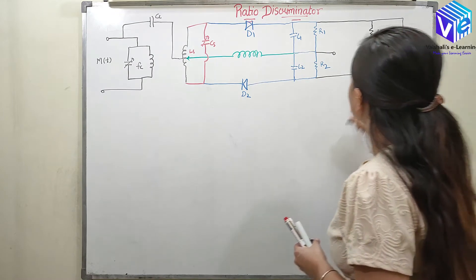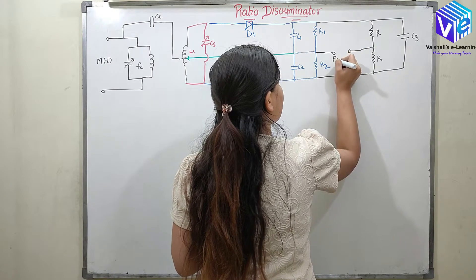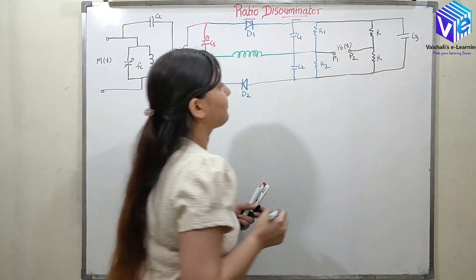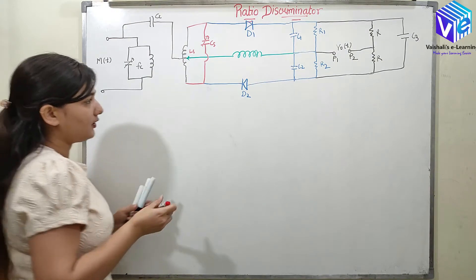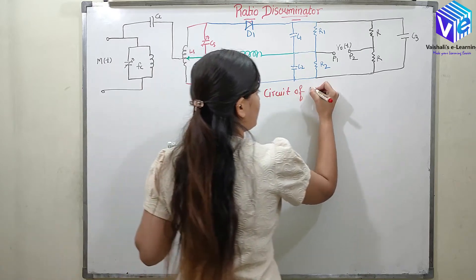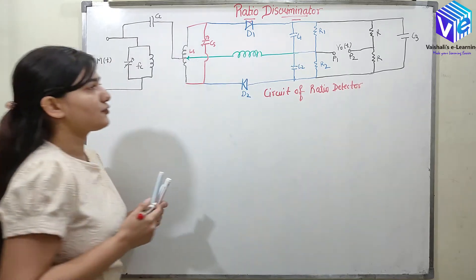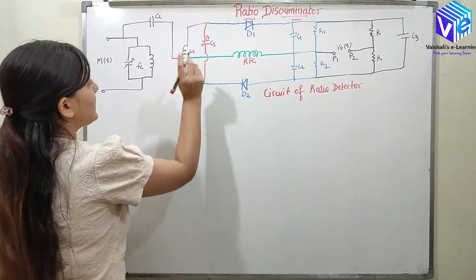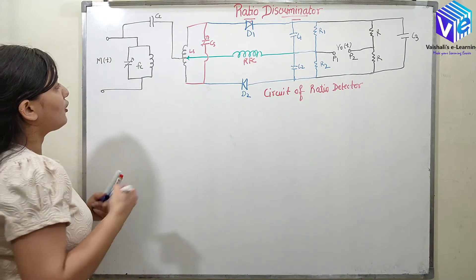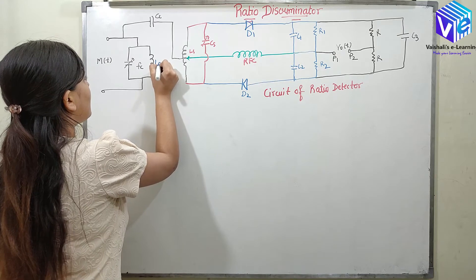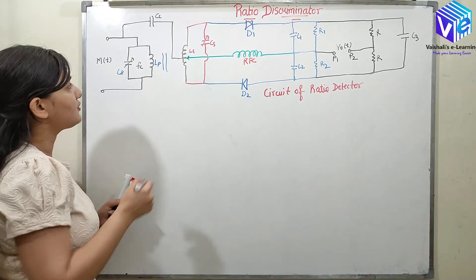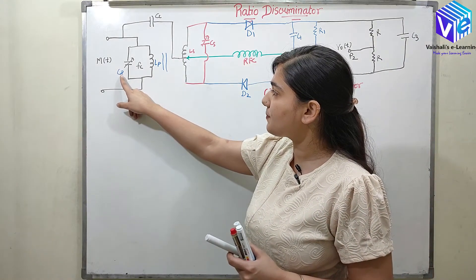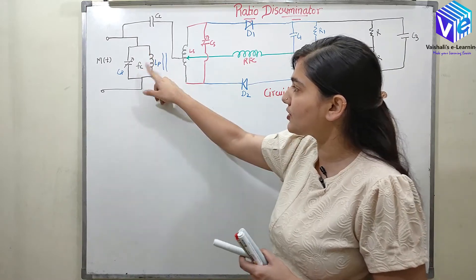The high-value capacitor is C3. The output is measured at terminals P1 and P2, giving V output T. To summarize the circuit: we have RFC, LS, CS, LP, CP, and a winding acting as a transformer. The primary capacitor and primary inductor form a tank circuit tuned at FC, and the secondary is also tuned at FC.